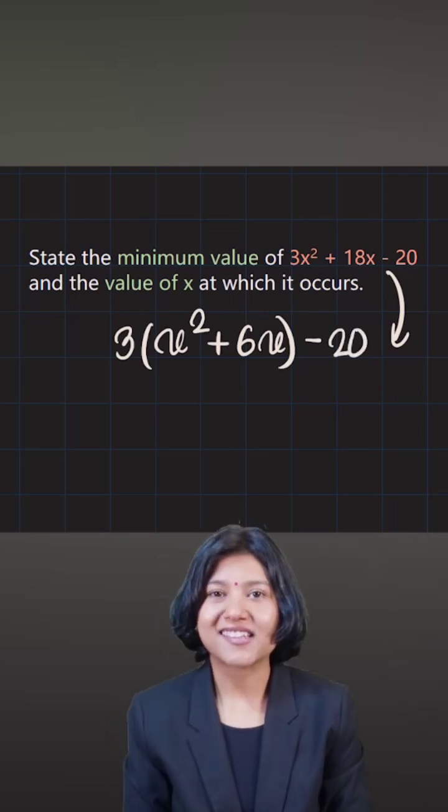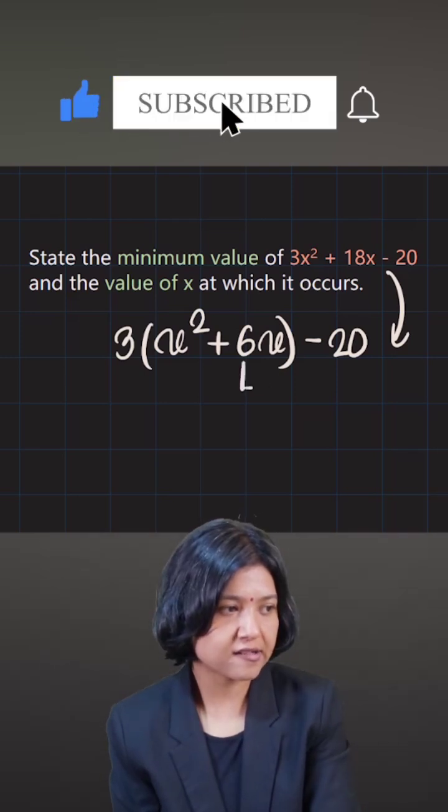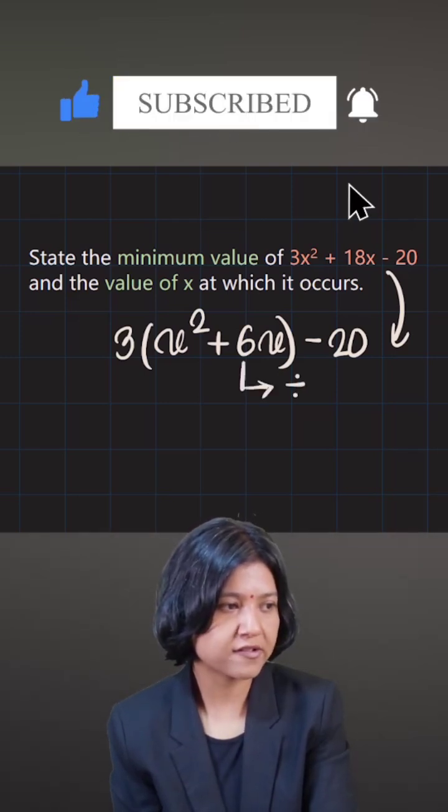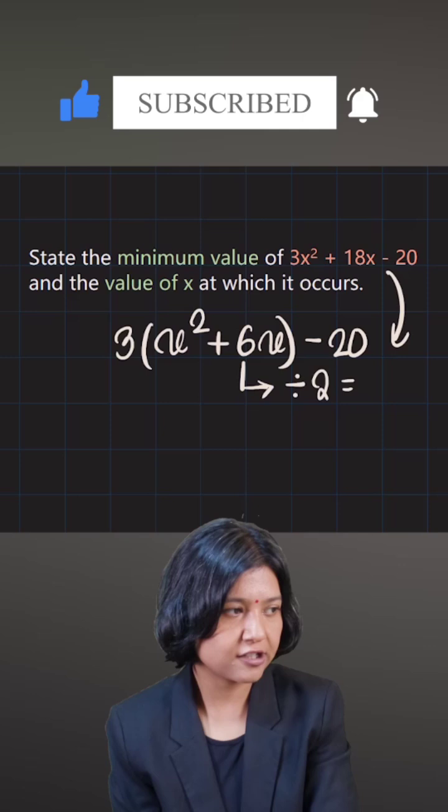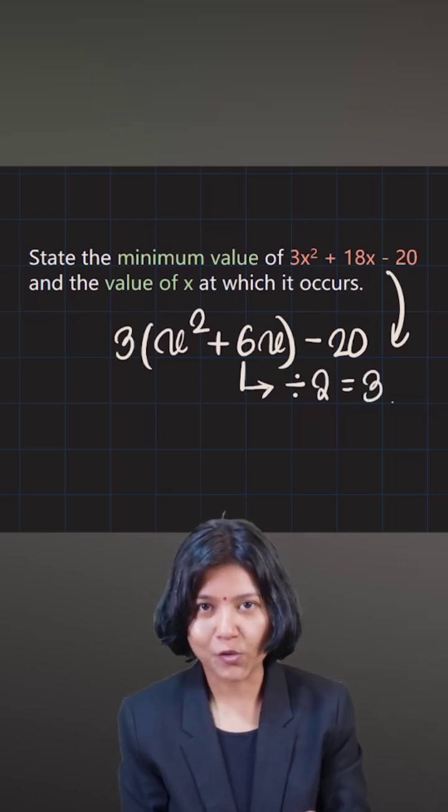Now x squared plus 6x can be completed into a whole square formula by taking the half of this 6. So what do we do? We do half of 6 which is 3. It is very clear that the square has to be completed by adding the square of 3.